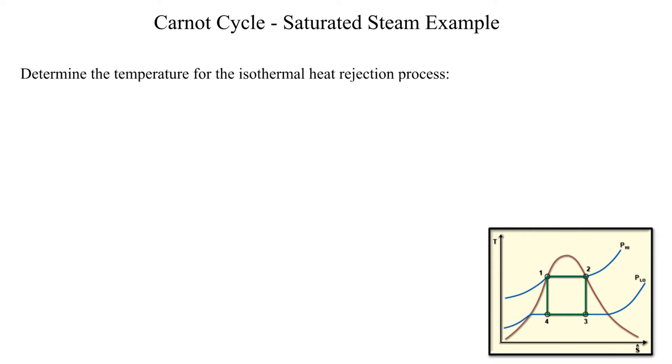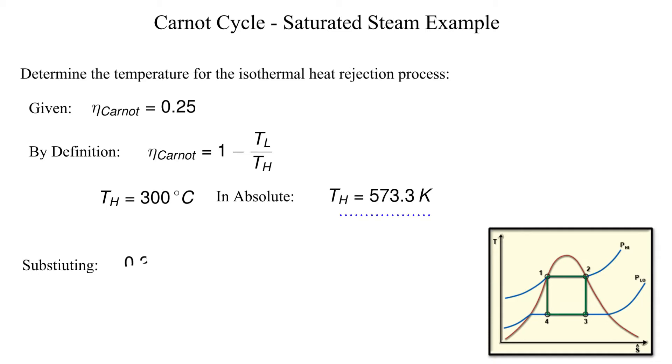The Cycle Efficiency is known, which in this case is also the Carnot Cycle Efficiency. The Carnot Cycle Efficiency can be calculated using the absolute temperatures for the heat addition and heat rejection as shown. Recall that we need to use absolute temperatures for this equation. The temperature for the isothermal heat rejection is 429.9 Kelvin or 156.7 degrees Celsius.